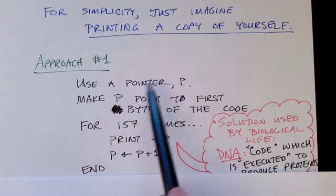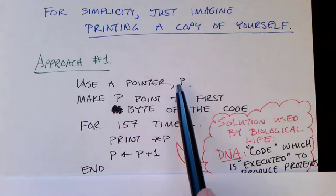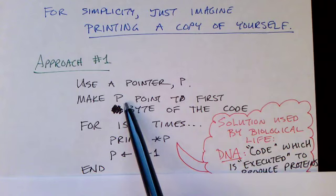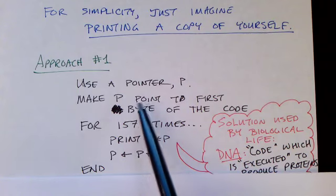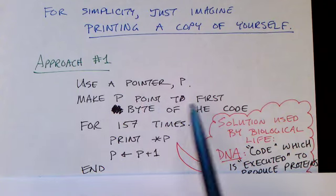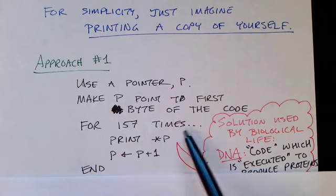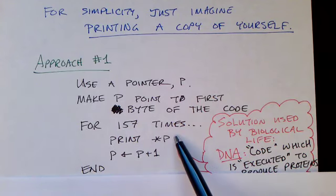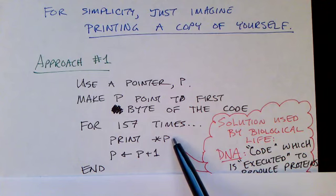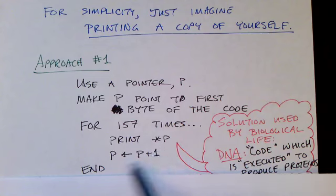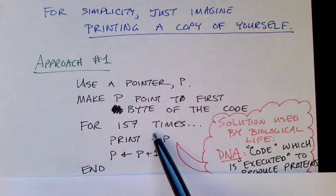One approach to dealing with the program that makes a copy of itself, or prints itself, is to do it like this. Let's assume that the program has a variable, p, that's a pointer. And the first thing it does is it sets that pointer to point to the address of the first byte of the code. And then it loops as many times as the program is big. In each iteration of the loop, it grabs the byte and prints it, and then increments p, and then repeats. And that would work.